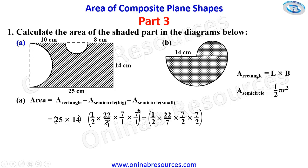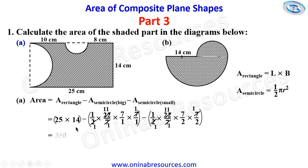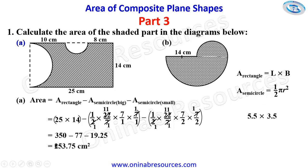Simplifying: 7 cancels with 7 giving 1, and 2 goes into 22 giving 11. So we get 25 times 14 = 350, minus 77 (which is 11 times 7), minus 19.25 (since 11/2 times 7/2 = 5.5 times 3.5). Therefore 350 minus 77 minus 19.25 gives 253.75 square centimeters, representing the area of the shaded part in shape 1A.